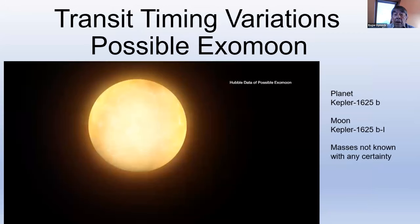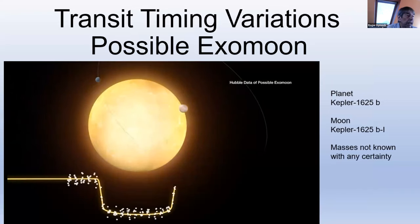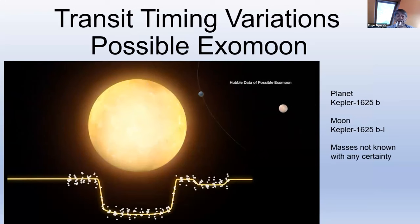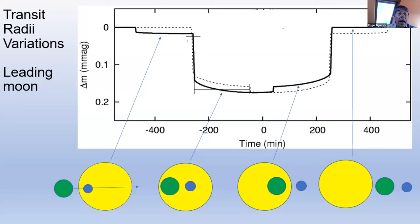Possible exomoons. Observations with the Hubble and Kepler space telescopes have uncovered evidence of what could be an exomoon, a moon orbiting a planet outside our solar system. You see a deeper transit of the planet followed by the shallow transit of the moon. The moon hypothesis is tentative and needs to be confirmed by follow-up observations.